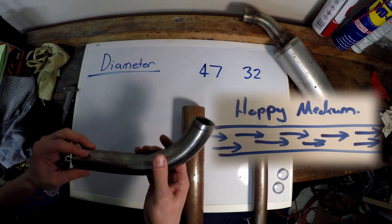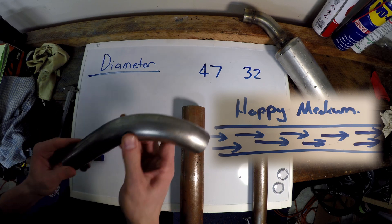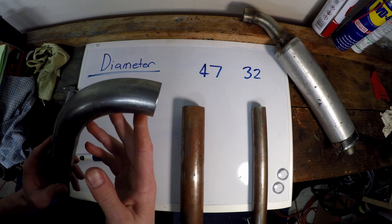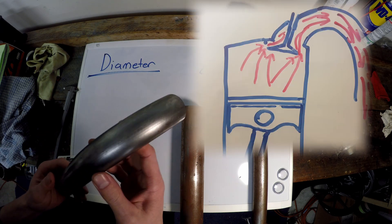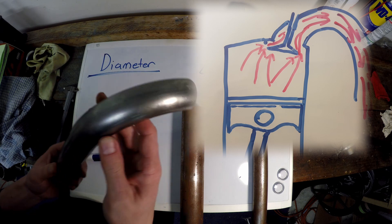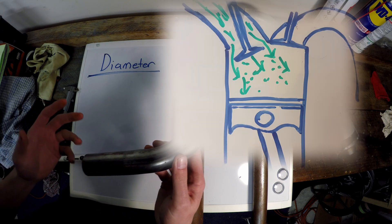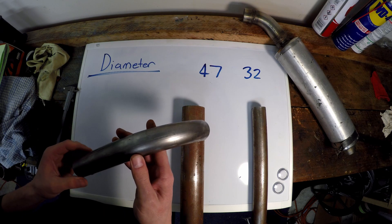There is a happy medium that we want to aim for. We want maximum velocity out of our pipe without it restricting the flow. This will promote scavenging and empty the cylinder more efficiently, which will increase the draw on our next stroke and increase horsepower.